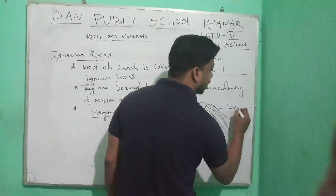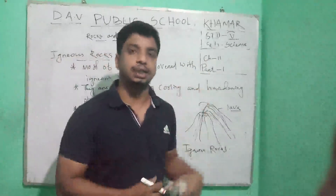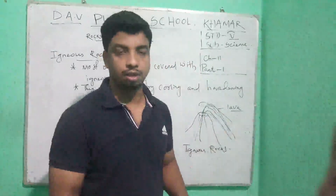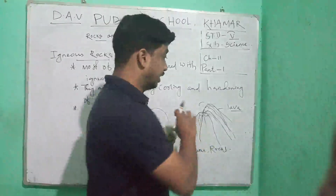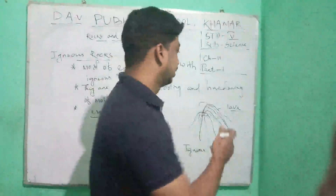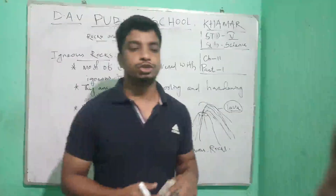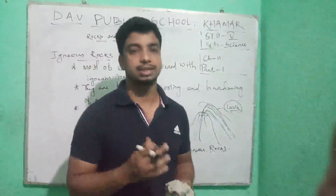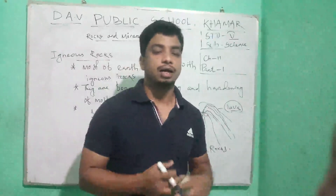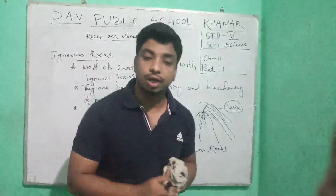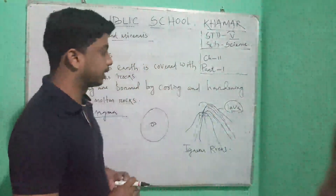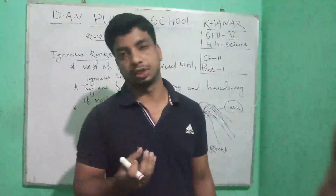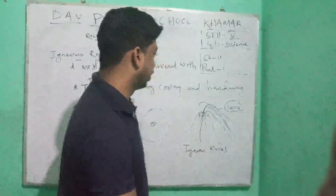When magma is pushed out from the innermost layer, it is called lava. Some of the lava cools and hardens below the Earth's crust and forms igneous rock. It becomes hard and turns into igneous rock.